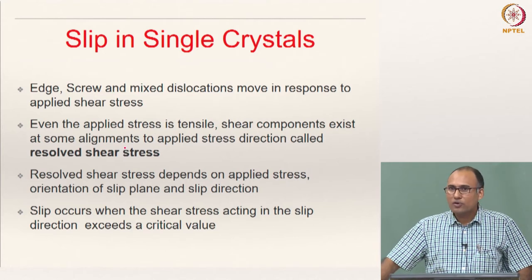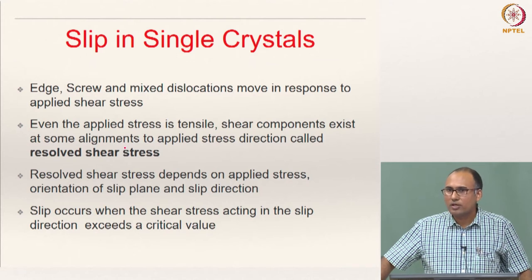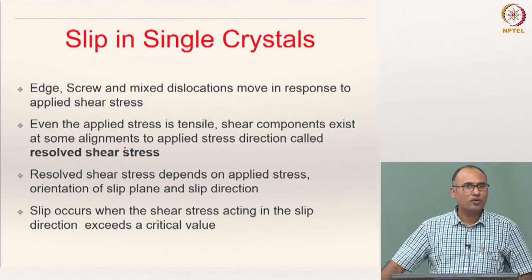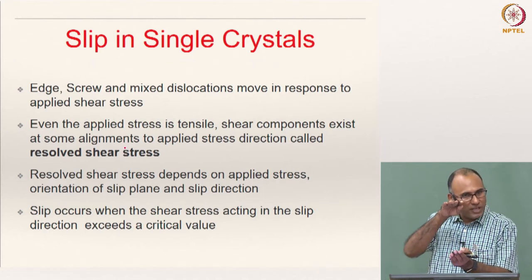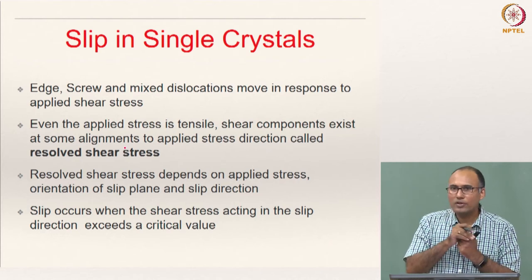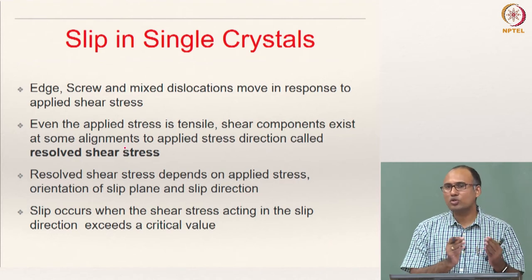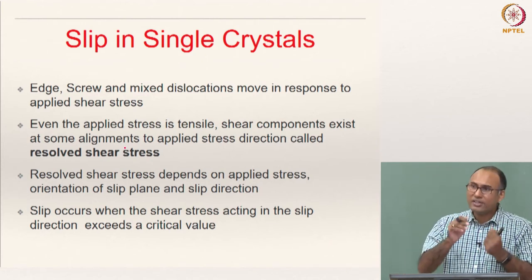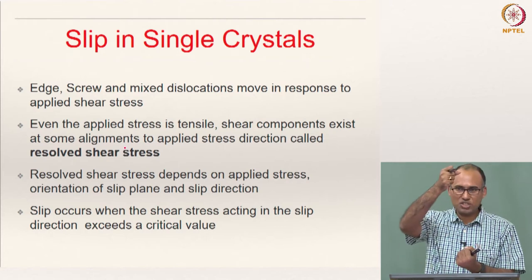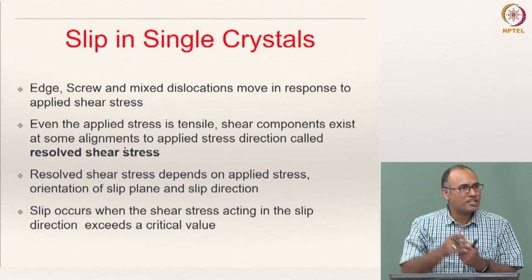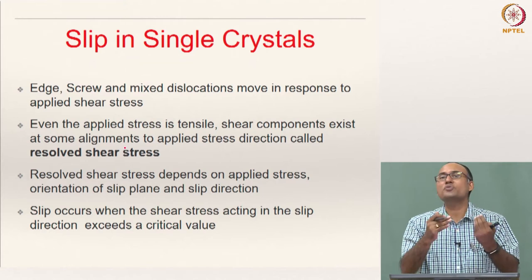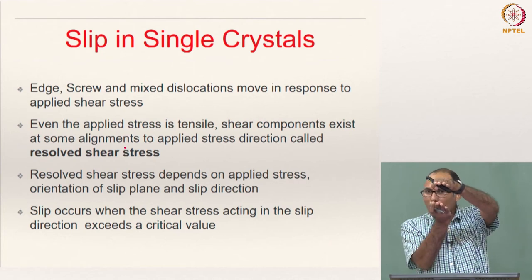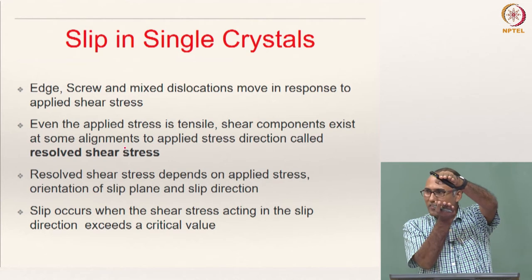As we have discussed, we have three different kinds of dislocations: edge dislocations, screw dislocations, and mixed dislocations. When you subject a crystal lattice to external shear stress, these dislocations tend to move within the crystal lattice. Even if the applied stress is tensile in nature, there are orientations along which you will have some shear, because plastic deformation is nothing but slip — the shearing of one plane of atoms with respect to another.